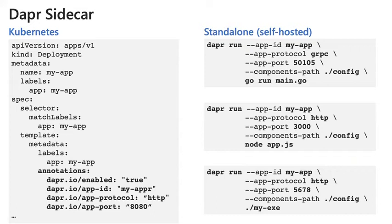How do you get one of those sidecars? If you're running on Kubernetes, it's as simple as decorating a deployment with a few annotations. Only two are required: you enable Dapr and tell Dapr the ID by which you want the application to be known, which comes into service invocation and many other things. Dapr will automatically inject a sidecar into the pod. In standalone mode outside of Kubernetes, you can run it using the 'dapr run' command — regardless of whether the process is a Go, Node, .NET runtime or an already-compiled executable.